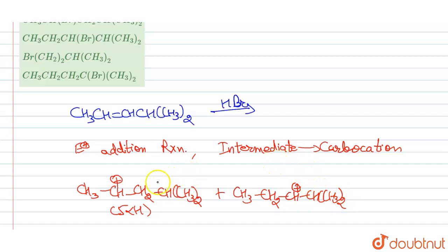This carbon. Now what is this? This has 5 alpha H and this has 3 alpha hydrogen.